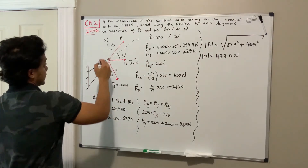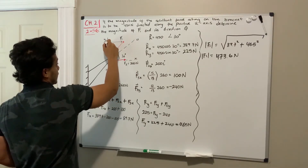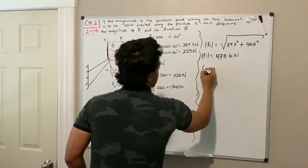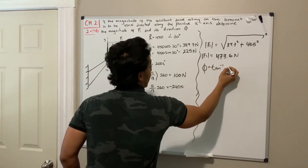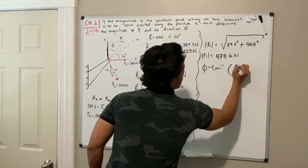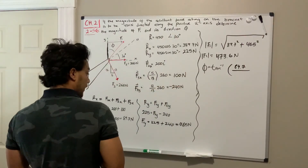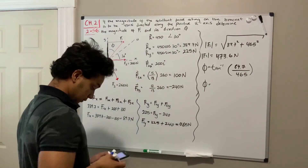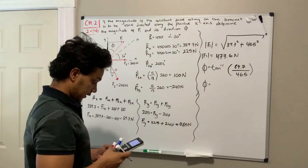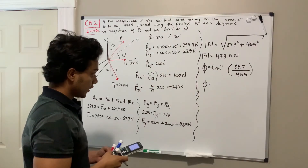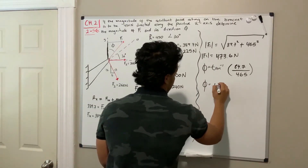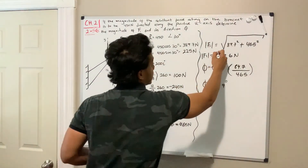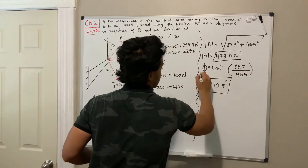Now we need to find the angle phi. To find phi, we take the inverse tangent, where the opposite is the x-direction value and the adjacent is the y-direction value of F1. So phi equals the inverse tangent of 89.7 divided by 465. In the calculator, that gives us an angle of 10.9 degrees. So this is the answer for the magnitude and this is the answer for its direction.